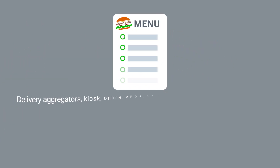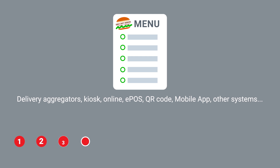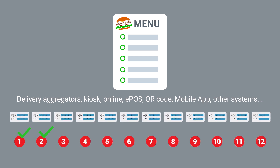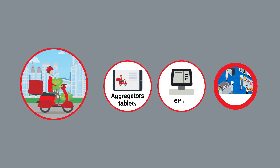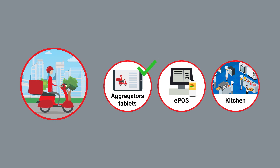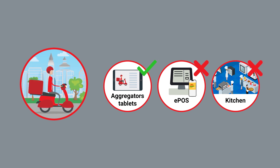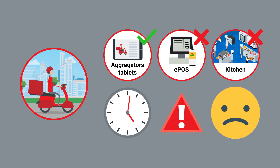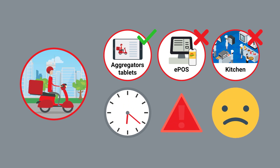When he needs to update his menus, he needs to log into over 10 different systems to update, including delivery aggregators, kiosk, online, EPOS, QR code and mobile app. Delivery orders are going to the aggregator's tablets, but are not going into the EPOS and kitchen for production, adding time, errors and frustrated customers to his business. Dom has a fractured tech stack.